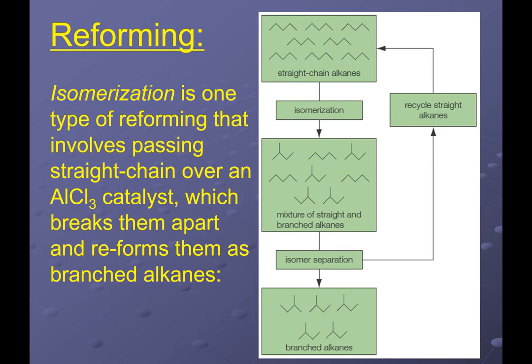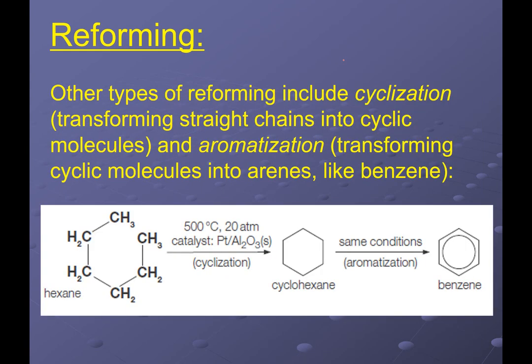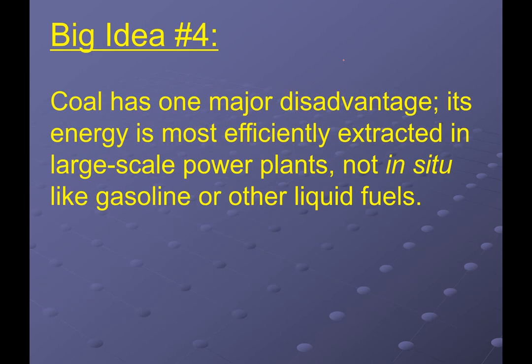For reforming, we take straight chains — which are subject to a lot of knocking — and if we can isomerize them via catalyst, we get a big mixture of structural isomers with slightly different physical properties. We can separate off the branched isomers and recycle the straight chain back through the cycle again. Other types of reforming that improve octane rating include cyclalization — converting a straight chain into a cyclic molecule — and aromatization, which makes an aromatic molecule. Both of these will improve the octane rating.